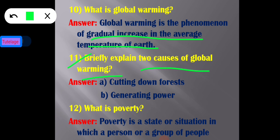The two causes of global warming are: first, cutting down forests — the amount of forests being cut down nowadays is one of the most important causes. Second, generating power — generating electricity and heat by burning fossil fuels causes a large chunk of global emissions and is also one of the most important causes. So global warming is the gradual increase in average temperature of Earth, with cutting down forests and generating power as two key causes.